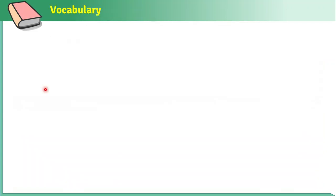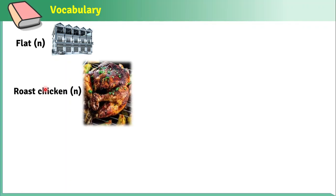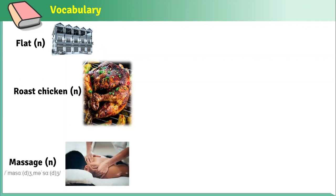Now it's time to learn vocabulary. The first word is 'flat.' Flat is a kind of house like a building — houses that are near each other. Next is 'roast chicken.' As the picture provided, we call it roast chicken.